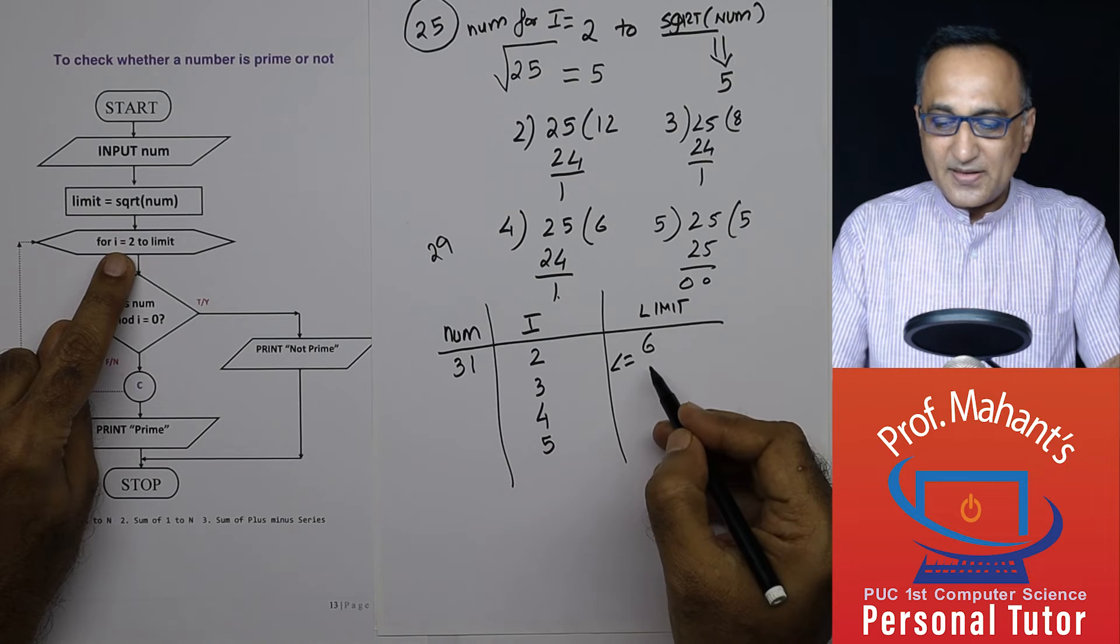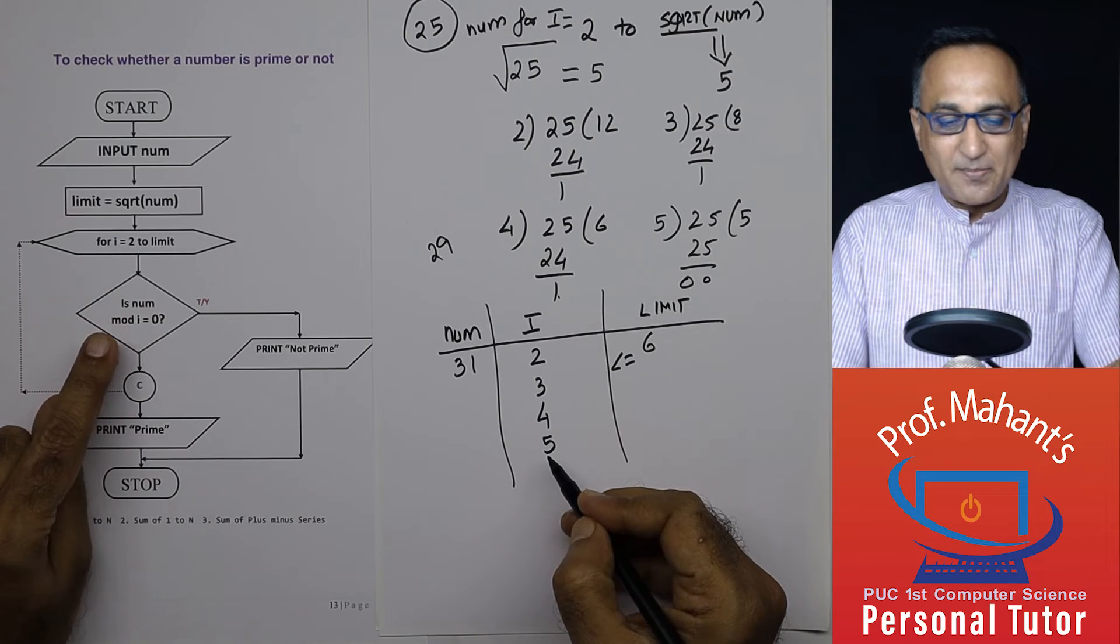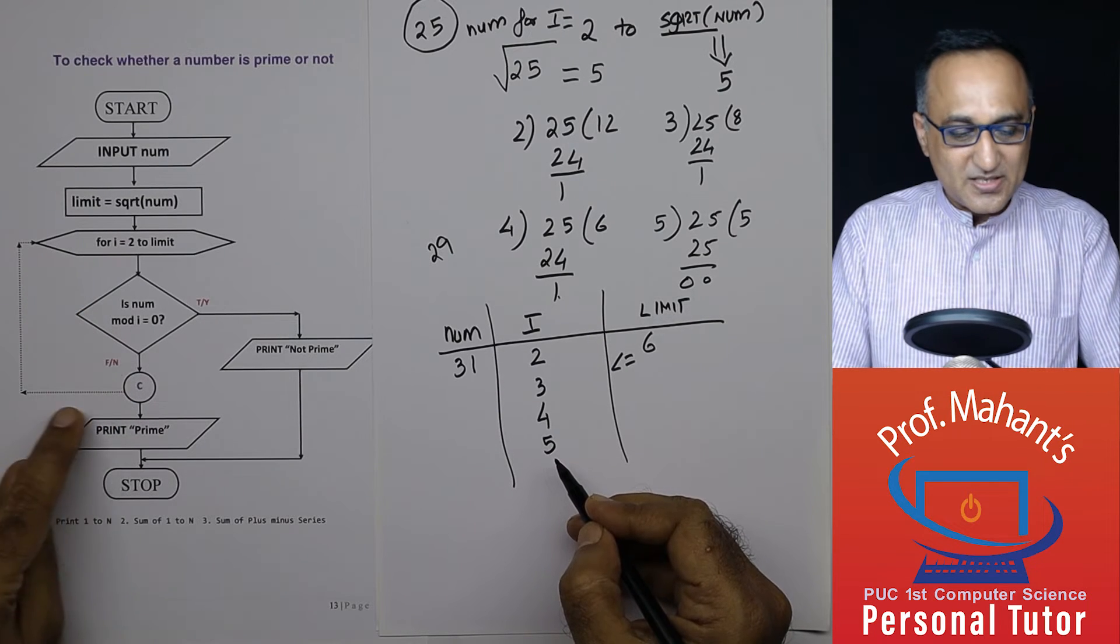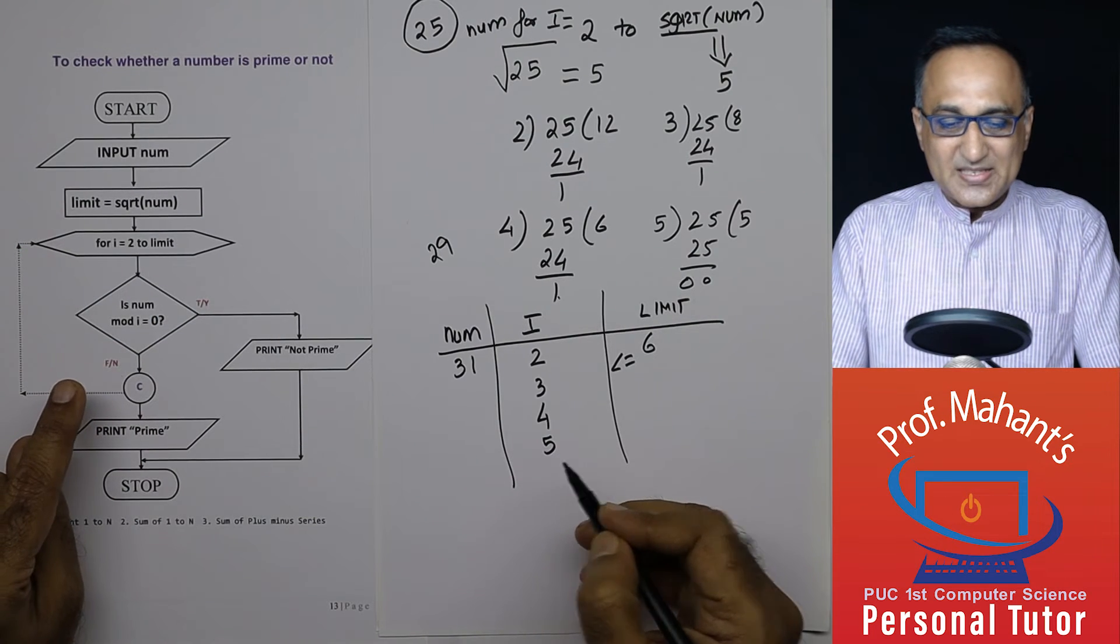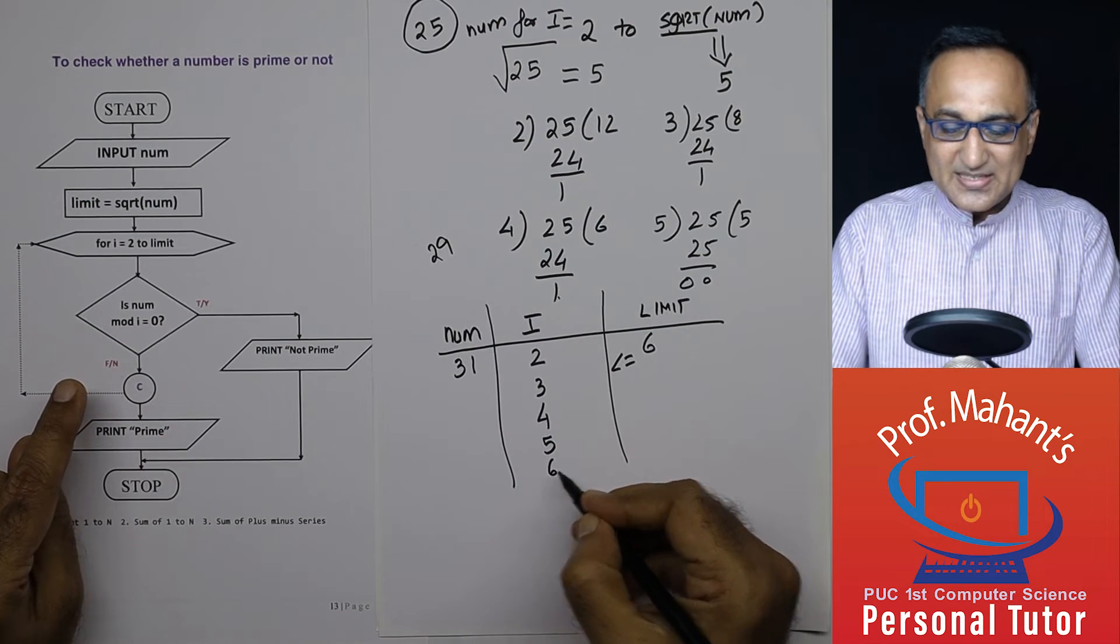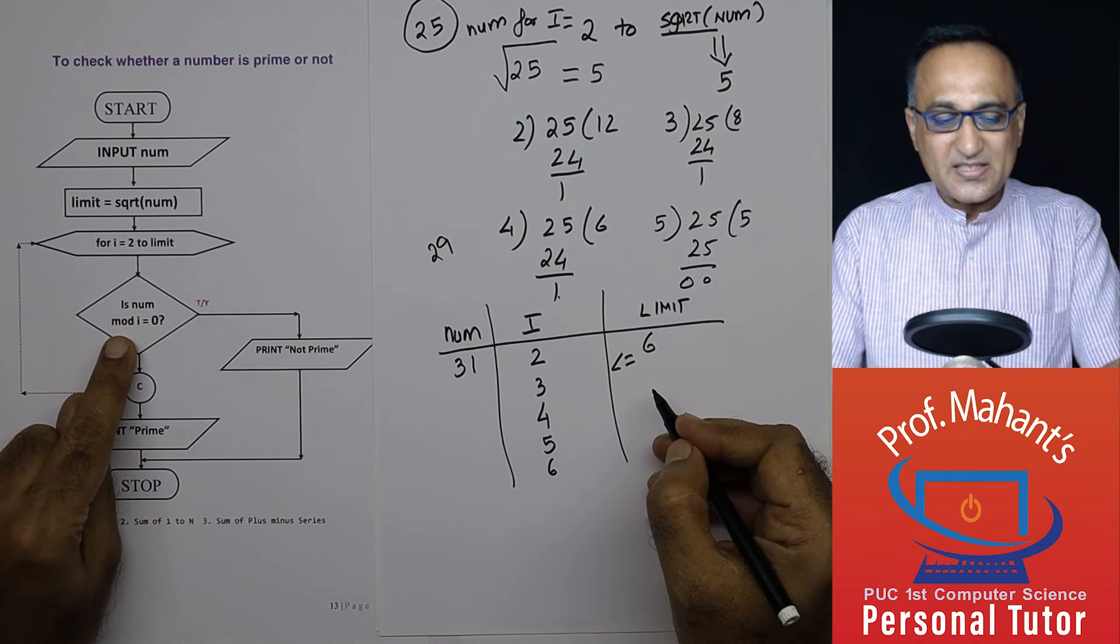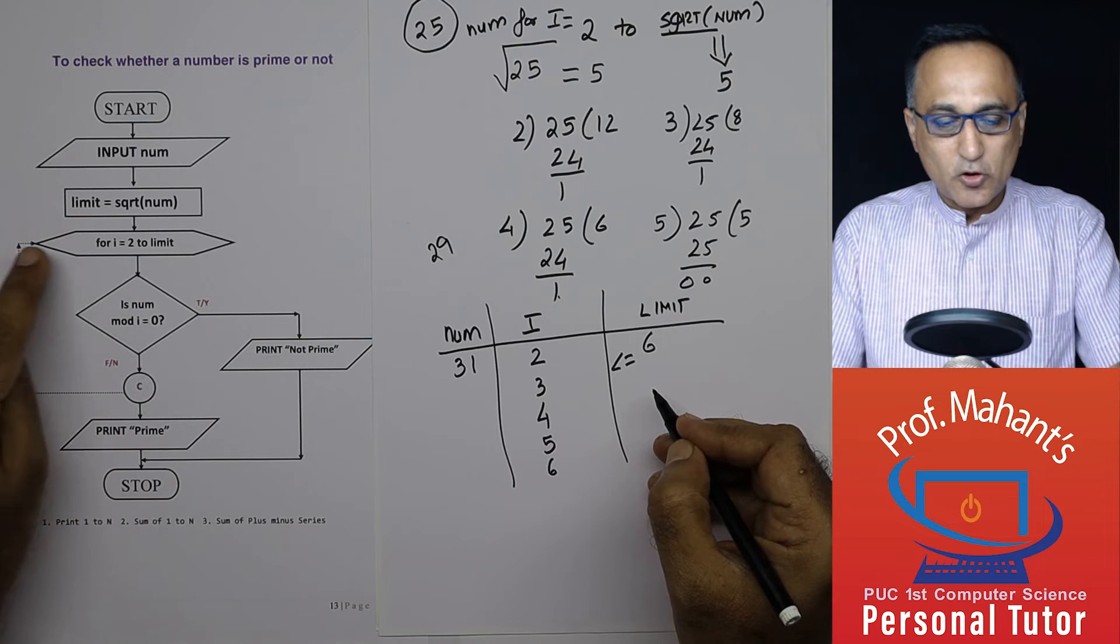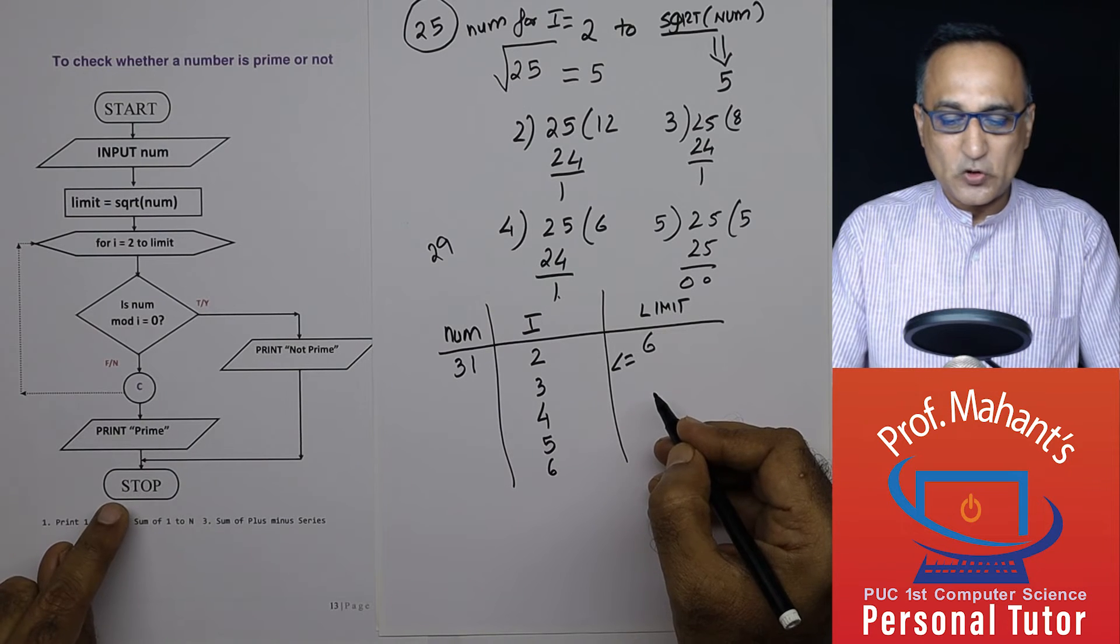i is 5. It is still less than or equal to 6. 31 by 5, the remainder is 1. I still, this condition is false. I go back here. Just see how this dot and all are connected here. Then what happens is i now ends up becoming 6. 6 is still equal to 6. 31 divided by 6 equal to 0 is still false. So automatically i is 7. It comes down here and it says 31 is prime and stops.